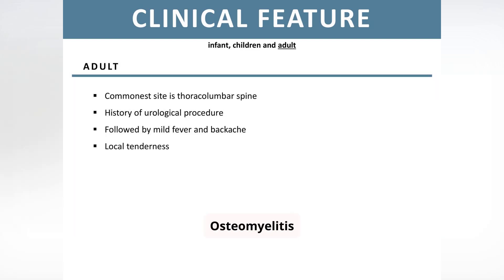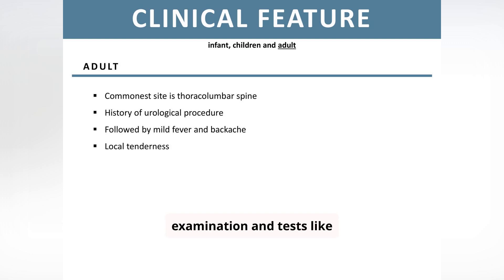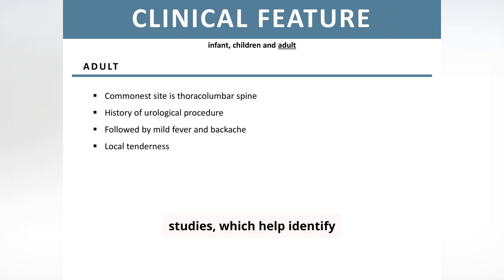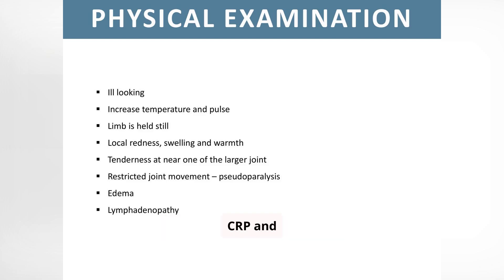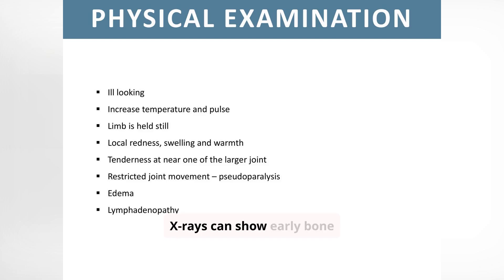Osteomyelitis diagnosis involves clinical examination and tests like blood cultures, bone biopsies, and imaging studies, which help identify infection and guide treatment. Blood tests reveal elevated inflammatory markers like CRP and ESR, while imaging such as x-rays can show early bone changes within a week.